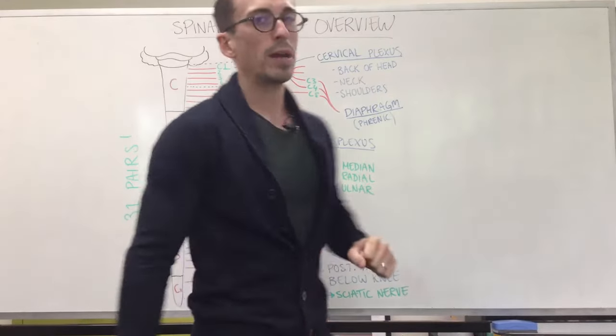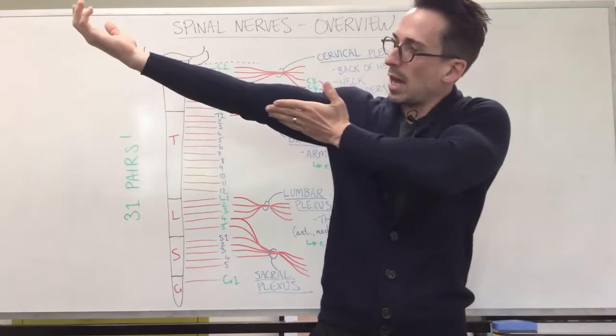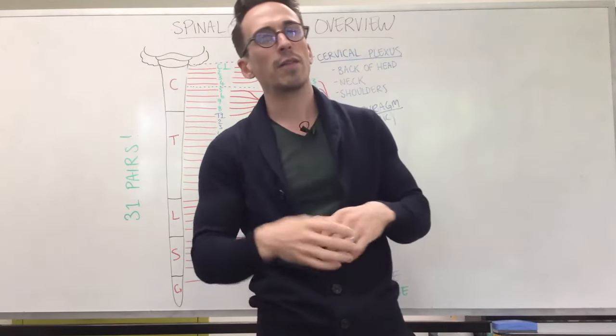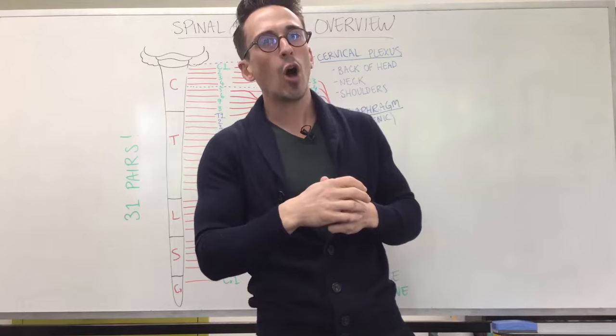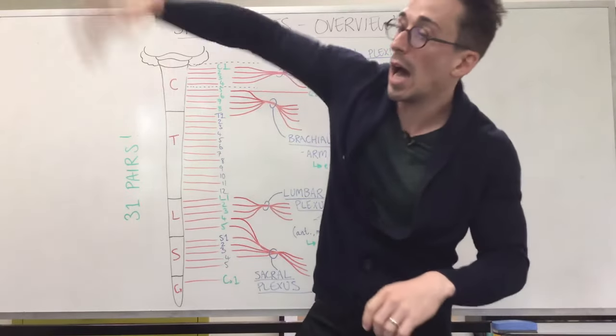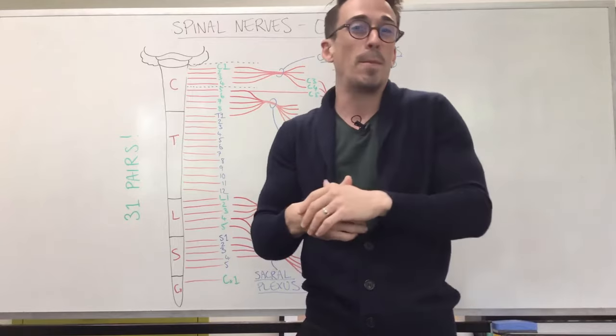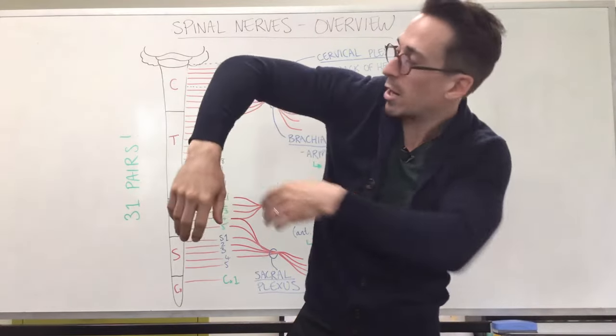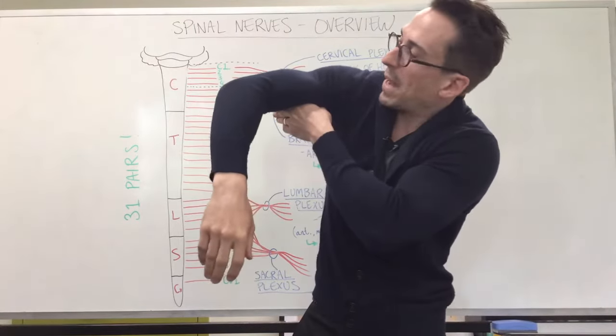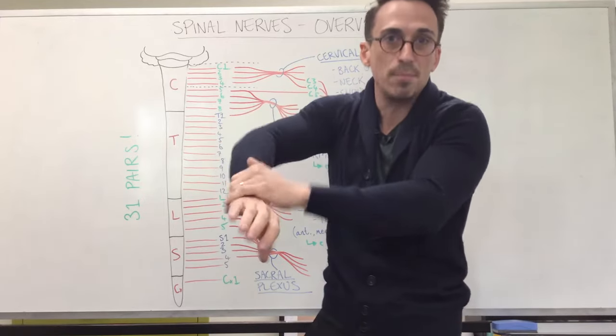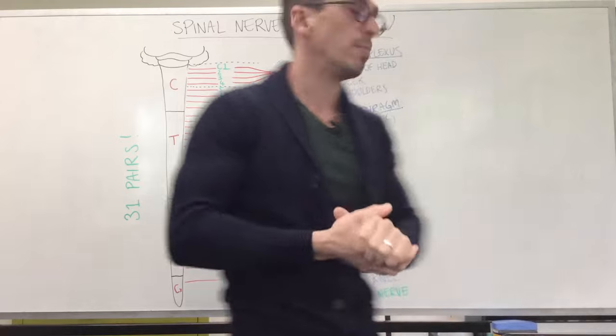The radial nerve innervates part of the arm, and then goes down and innervates a lot of the hand. You'll find that some people, after having too many drinks, can go home and fall asleep on their couch with their arm over the back of the couch, or depending on how drunk you actually are, fall asleep on a park bench, throw that arm over the park bench, and it can impinge on that radial nerve and result in that arm basically being a dead arm. So this is called Saturday Night Palsy.